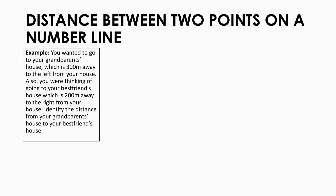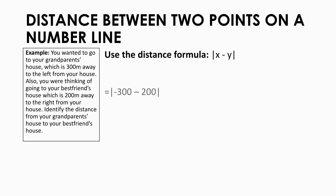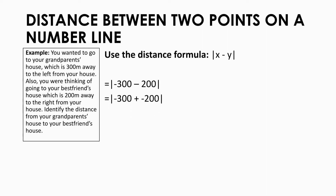For the question, it says to find the distance from your grandparents' house to your best friend's house with the formula, which is the absolute value of x minus y. This means x is going to be the distance to your grandparents' house, and y is the distance to your best friend's house. So, negative 300 minus 200 — keep, flip, change — becomes negative 300 plus negative 200, which equals negative 500. Get the absolute value, and it's 500.